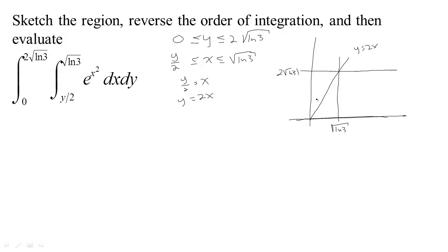Y is between these two constants. The x always starts at the line and goes until it reaches root ln three. Now we wanted to set it up with x between two constants. And now we can see how to do it from our drawing. From our drawing, the x value is always between zero and the square root of ln three. And then for a given x value, the y value starts at zero and climbs until it reaches this line where the y value is 2x. So the y is going from zero to 2x.